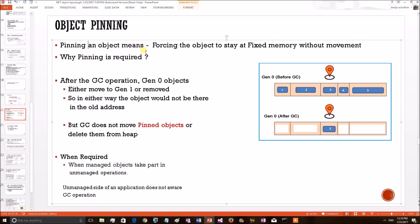Pinning an object means forcing the .NET object to stay at a fixed memory location without movement. From here itself we get some idea. Who moves a .NET object from one generational heap to another? It is the GC, right? This we have explained in our previous discussions.